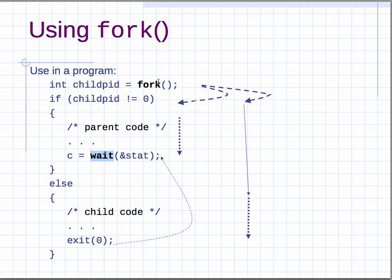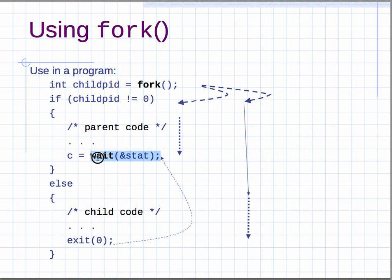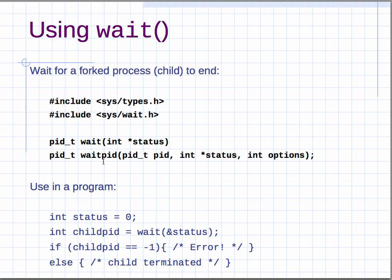Fork returns twice: once in the parent and once in the child. In the child, it returns the value zero. So you can check with an if statement — not equal to zero means parent, else means child. Execute all the child code and then at the very end you can exit. Wait is almost always used by the parent to wait for the child to finish. Later when we use threads, you'll want to use waitpid to wait for a specific thread by process ID.